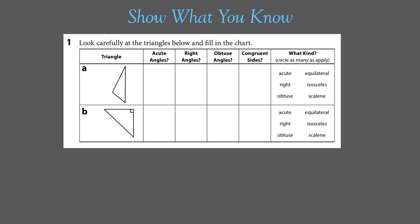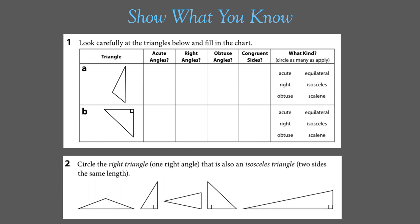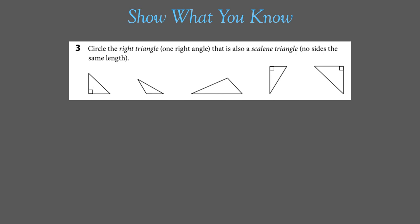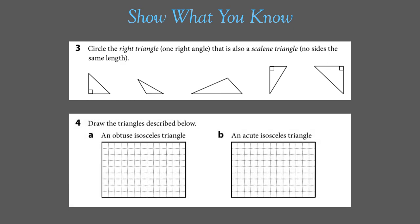Then identify what kind of triangle it is — acute, right, obtuse, equilateral, isosceles, or scalene — and circle as many as apply. Question 2: Circle the right triangle that is also an isosceles triangle. Question 3: Circle the right triangle that is also a scalene triangle. Question 4: Draw the triangles described — A is an obtuse isosceles triangle and B is an acute isosceles triangle. Once done, submit your work to your teacher. See you next week for Week 12 of Bridges Grade 5.